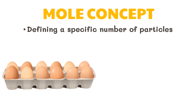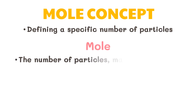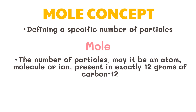A more convenient way to handle calculations in chemistry is by defining a specific number of particles — just like when we say a dozen eggs refers to 12 eggs, or a ream of paper is 500 pieces of paper. This specific number of particles is the mole. A mole is defined as the number of particles — may it be an atom, molecule, or ion — present in exactly 12 grams of carbon-12.